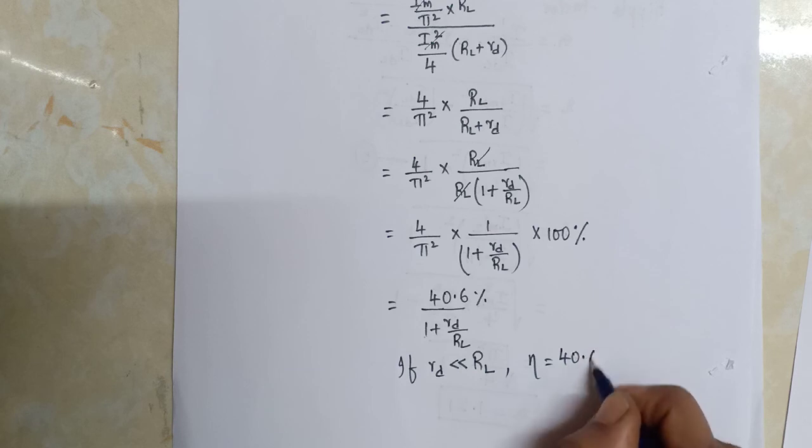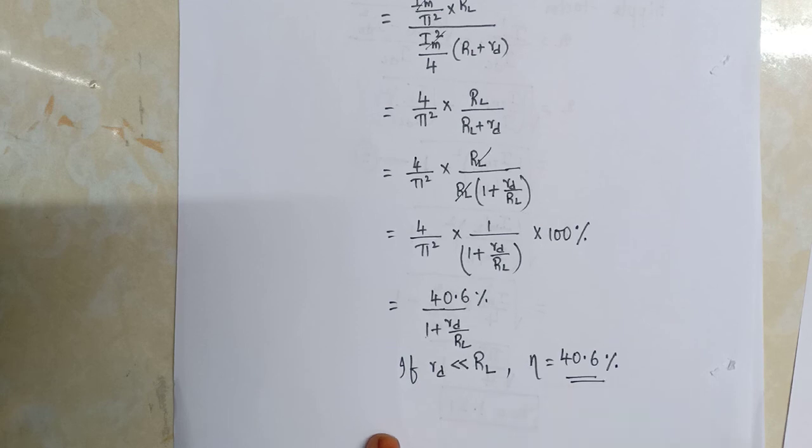40.6% is the rectification efficiency of the half wave rectifier. That is, 40% of input AC is converted into output DC.